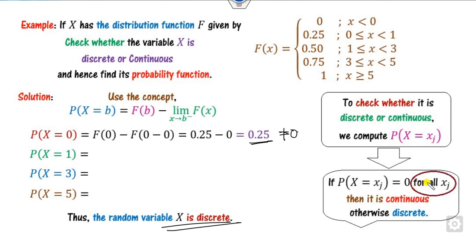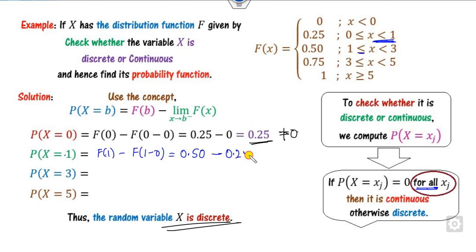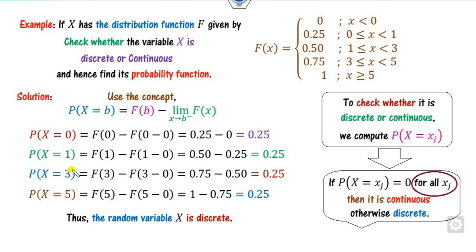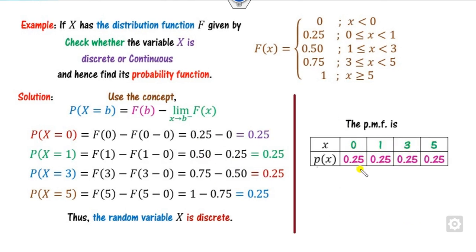Therefore, since it is a discrete random variable, we can write the PMF in a table form. The sum of all probabilities equals 1, confirming it is a valid PMF.